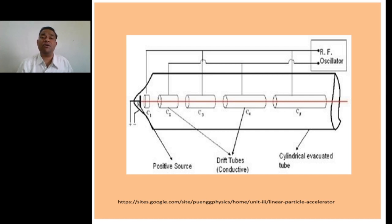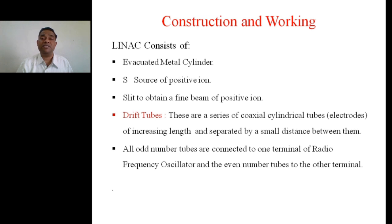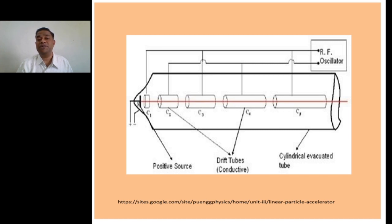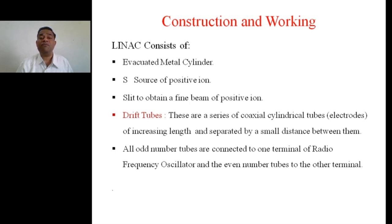A linear accelerator consists of an evacuated metal cylinder. Inside this evacuated metal cylinder, a source of positive ions S is kept. The source emits positive ions, and with the help of a slit, a finely collimated beam of positive ions can be obtained. The linear accelerator also consists of drift tubes — a series of coaxial cylindrical tubes of increasing length, separated by a small distance between them. These coaxial cylindrical tubes are called drift tubes, and they also act as electrodes.